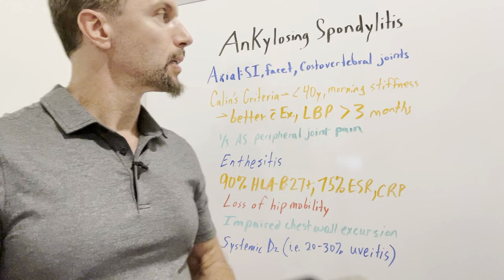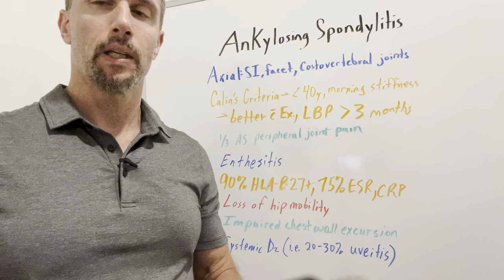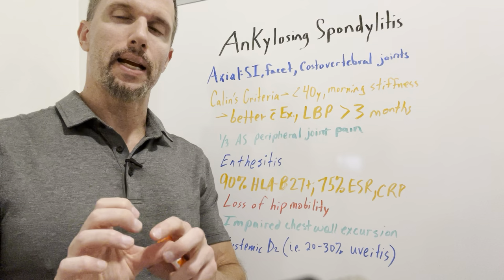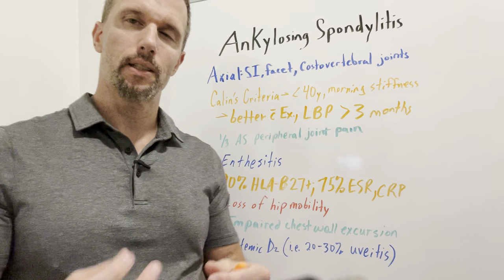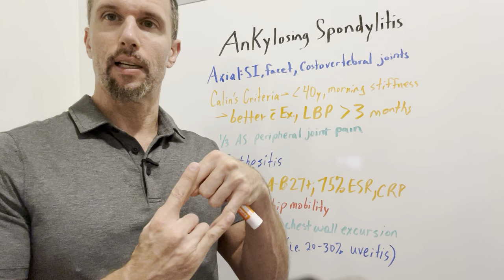The disease process usually starts between 20 and 30, definitely before 40. It usually starts with the sacroiliac joint where the sacrum and the ilium meet — that's usually the first symptom with pain there. It'll often work up into the spine and start to get the facet joints. Vertebrae have intervertebral discs between them but also little connections called facet joints, and those can ossify with a lot of inflammation.